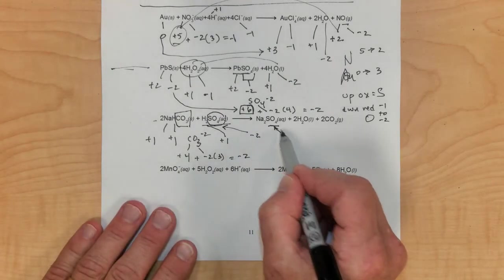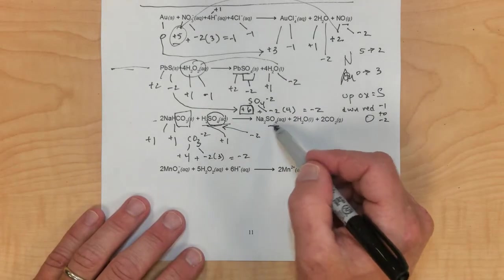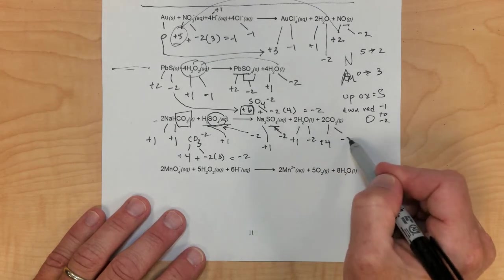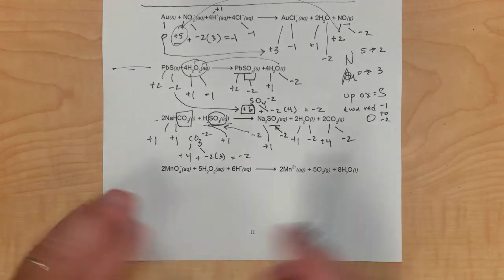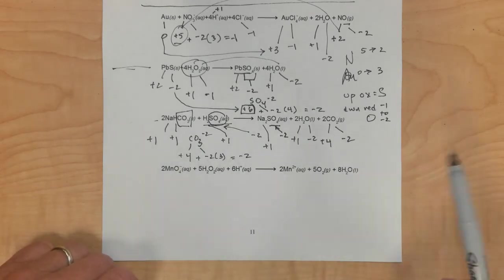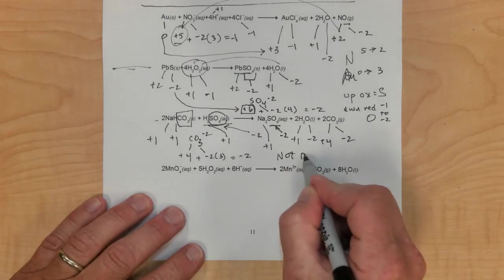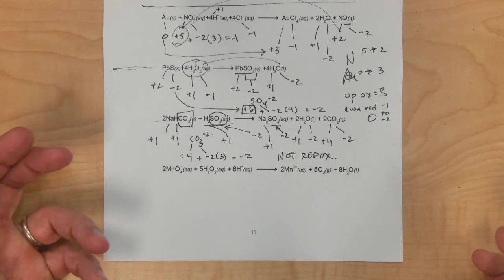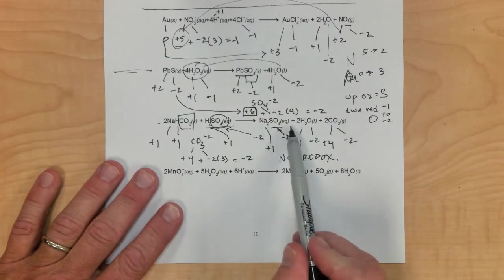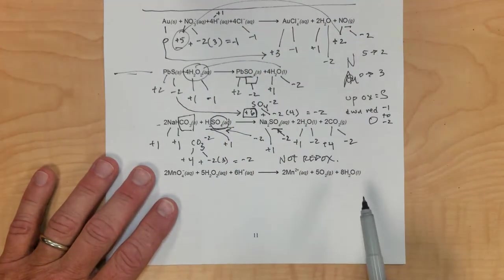Sulfur would be positive 6, but it stays the same on both sides. Sodium is plus 1, hydrogen is positive 1, oxygen is negative 2, carbon is positive 4 on both sides. As we see, nothing changes — carbon remains positive 4, oxygen is negative 2, sodium is positive 1, and the sulfates are negative 2 on both sides. So this is not a redox reaction. Is there a solid formed? It doesn't look like there's a solid formed. There is a gas formed, so if it's not redox and not precipitation, it's probably acid-base.